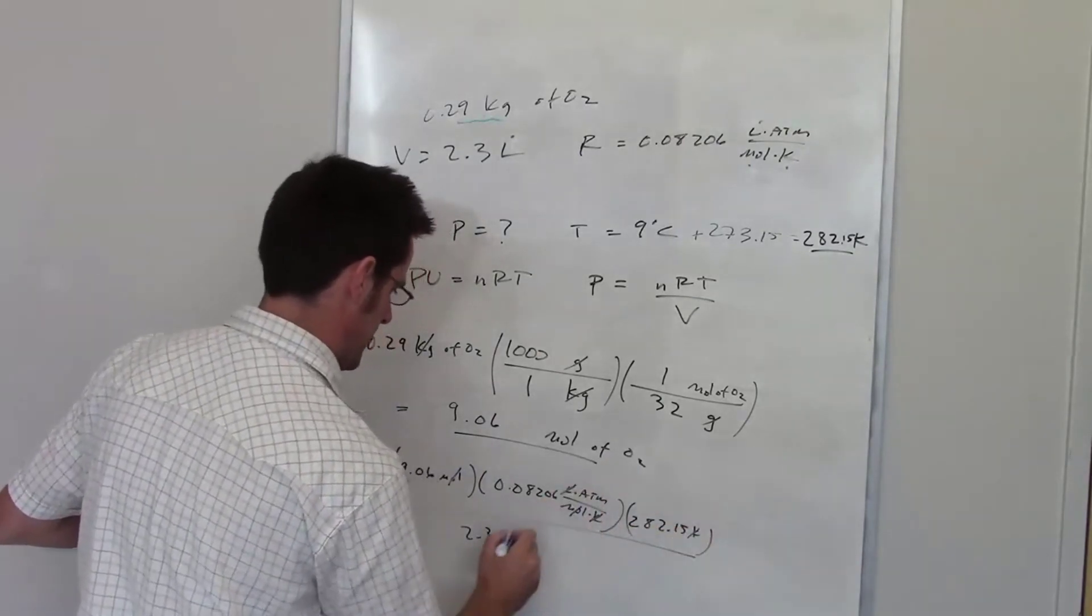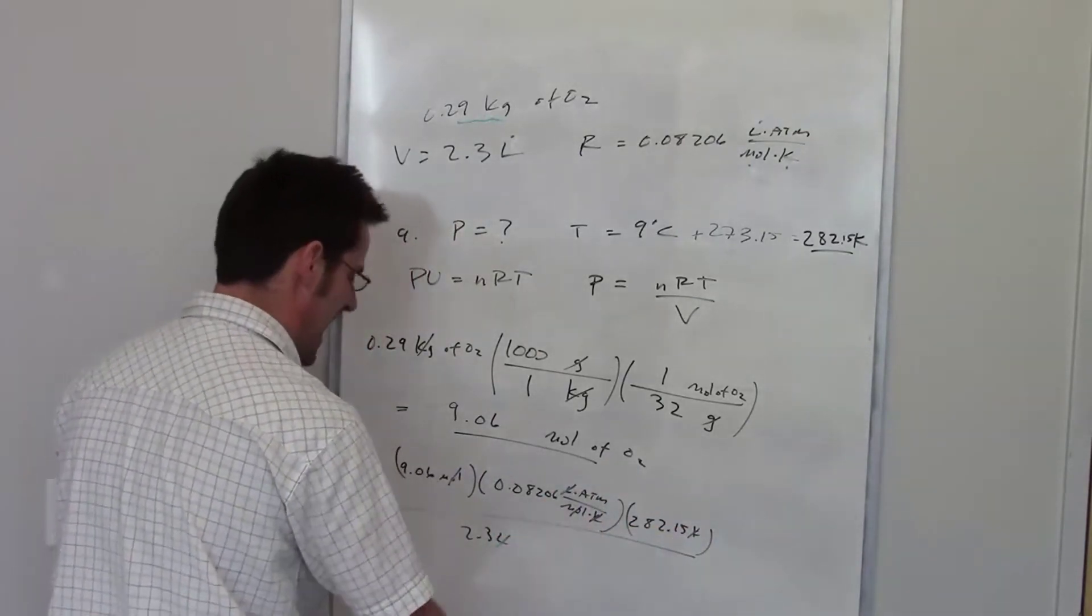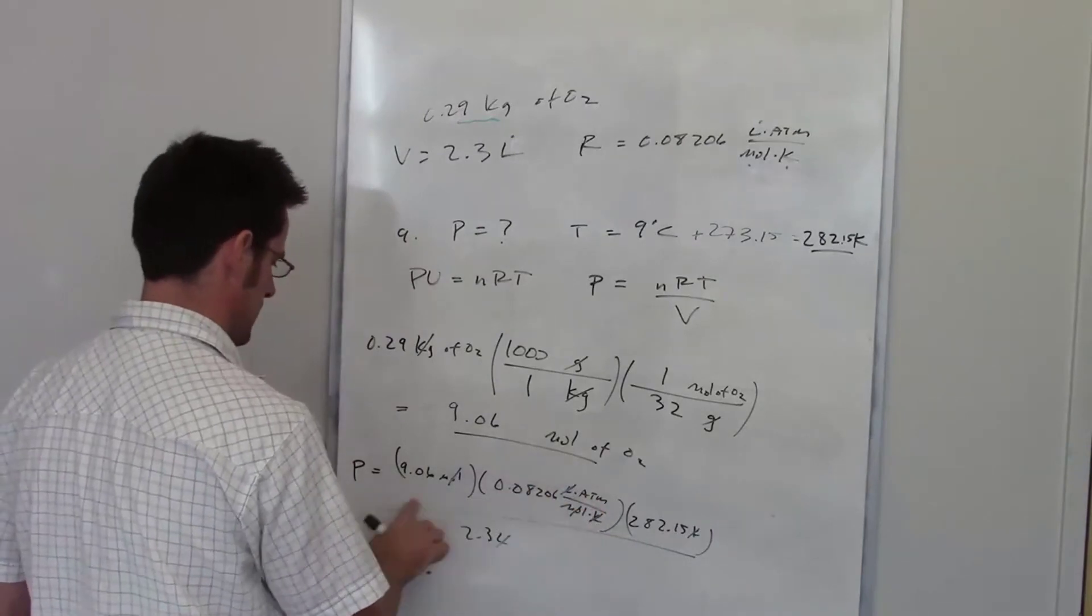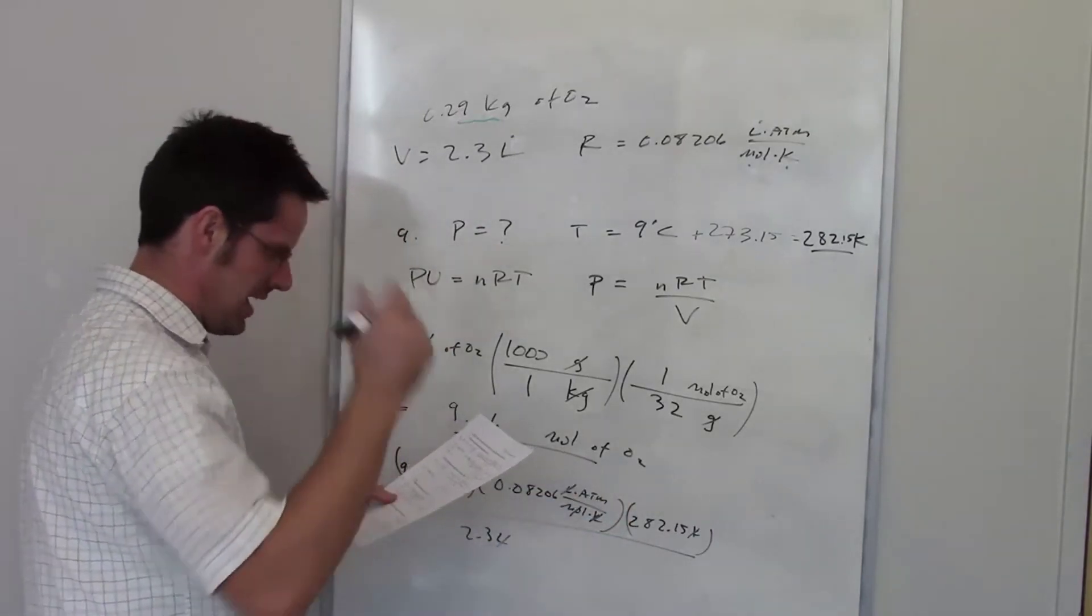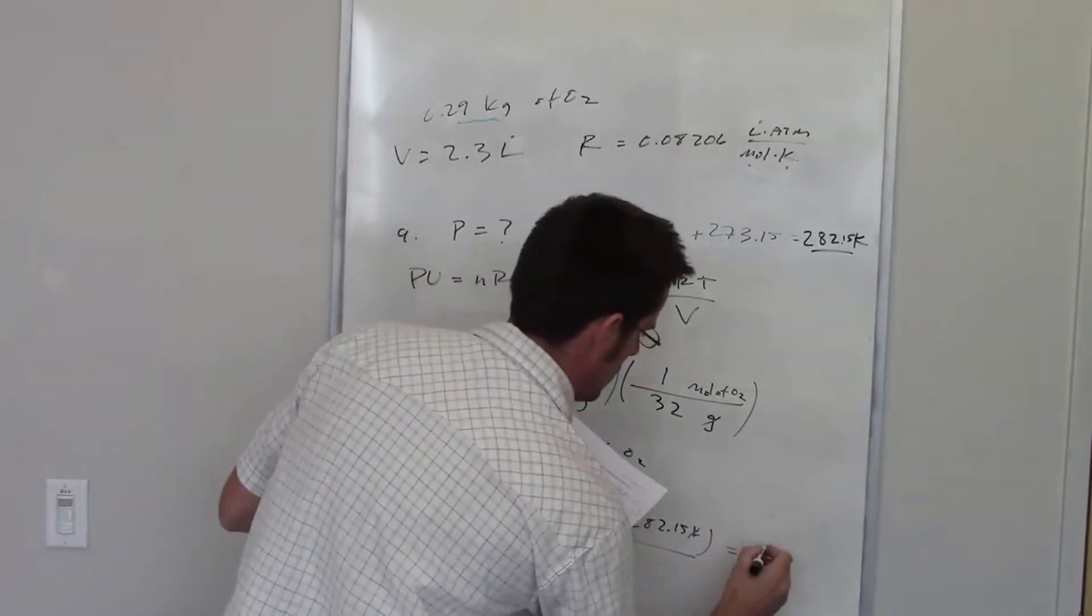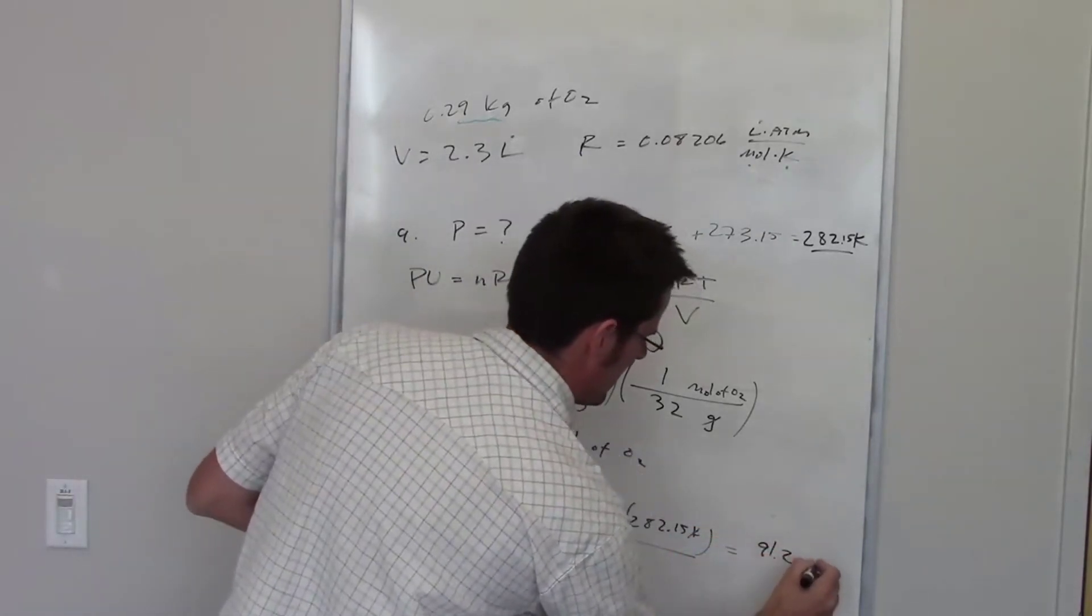My moles cancel each other out, my kelvins cancel each other out, my liters cancel each other out. I'm left with units of atmospheres, which are the units of pressure that I'm looking for. When I threw that in my calculator, I ended up getting 91.2 atmospheres.